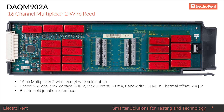The DAQM902A is a 16-channel multiplexer also using reed relays, scanning faster at 250 channels per second. You can use it for thermocouples, but the thermal offset is less than 4 microvolts — not ideal for high accuracy thermocouple measurements. It does have a cold junction reference, so it could serve as a backup thermocouple card, and it's also well-suited for four-wire measurement situations.